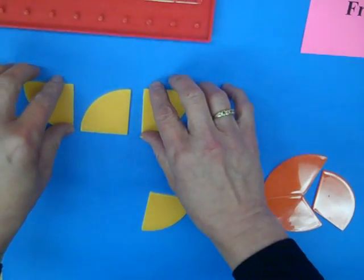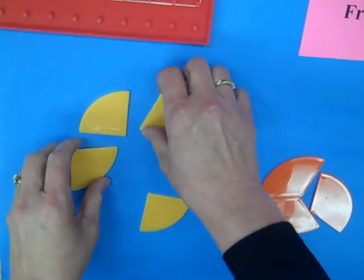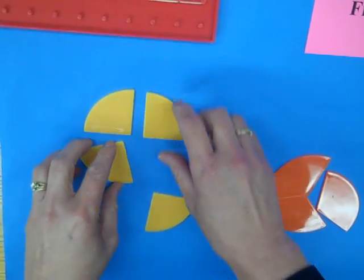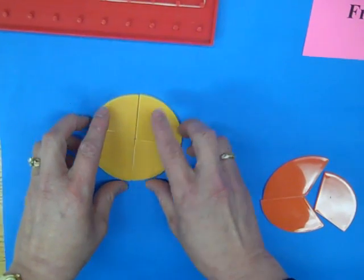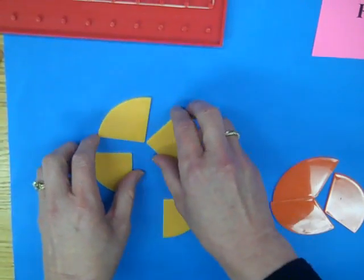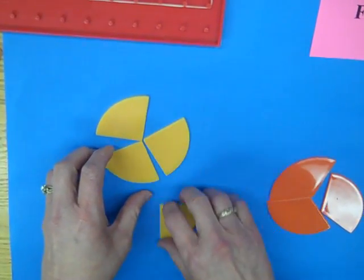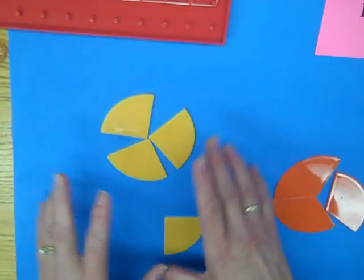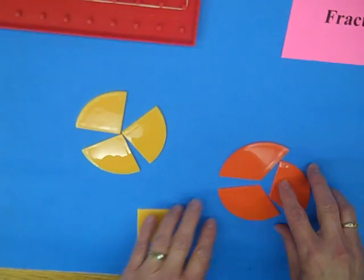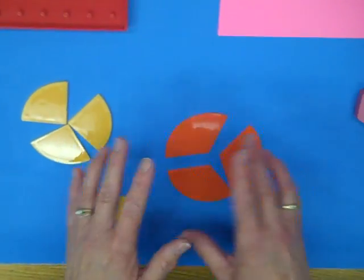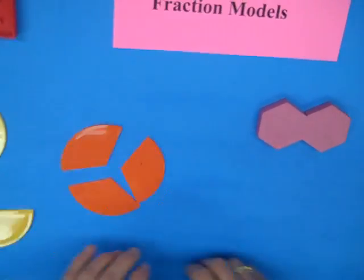Remember arrangement doesn't matter. If I have three parts that are all the same, and I originally cut my circle into four, I can have them spaced apart. I can have them whatever. Get your students to think outside the box here. And likewise I could do it with any other ones.